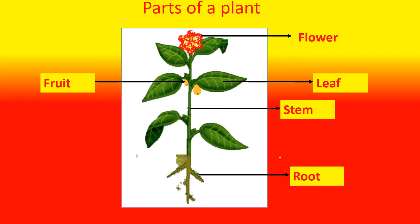Now what do these parts do? Root — it fixes the plant to the ground. Stem — it carries water and food to all other parts of the plant. Leaf — it is the flat green part that makes food for the plant. Flower — it is the part that produces fruits. Fruit — it is the part that has seed. And do you know what is inside the seed? Yes, a baby plant grows from the seed.